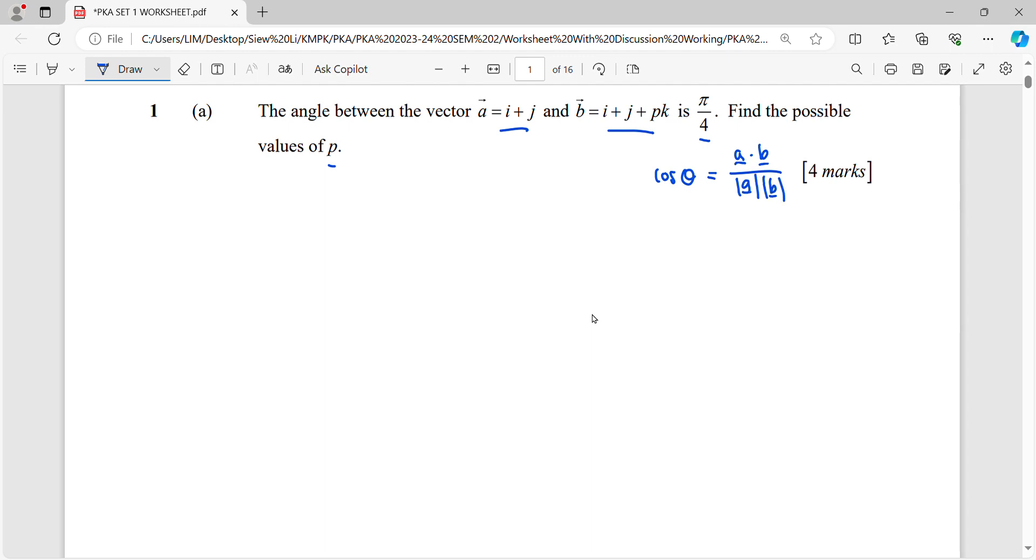Okay, so the angle given here is pi over 4, we can substitute inside, cos pi over 4 equals to dot product 1, 1 dot with vector b.